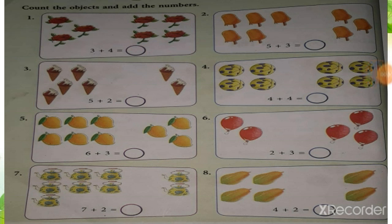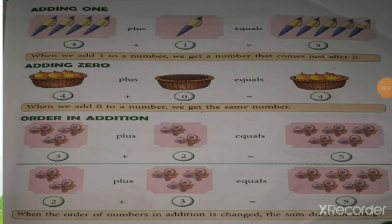Count the objects and add the numbers. In part 1 there are 3 roses and in part 2 there are 4 roses. Count all roses together: 1, 2, 3, 4, 5, 6, 7. So 3 plus 4 equals 7. Adding 1: 4 plus 1 equals 5. When we add 1 to a number, we get the number that comes just after it. Adding 0: 4 plus 0 equals 4. When we add 0 to a number, we get the same number. Order in addition: 3 plus 2 equals 5, and 2 plus 3 equals 5. When the order of numbers in addition is changed, the sum does not change.